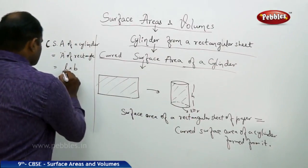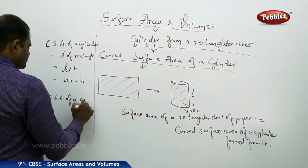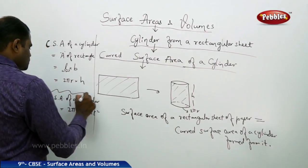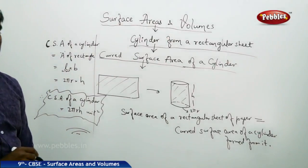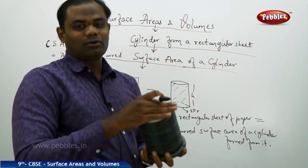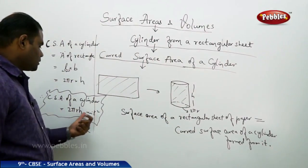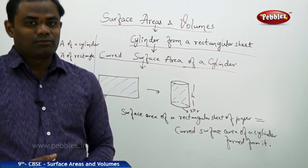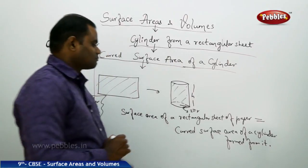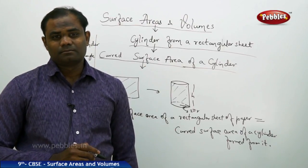So length becomes 2πr and breadth becomes height h. Therefore, CSA of a cylinder is 2πrh square units. The curved surface area is only the curved part, not including the top and bottom. Here π is 3.14, r is the radius of the circle, and h is the height of the cylinder.